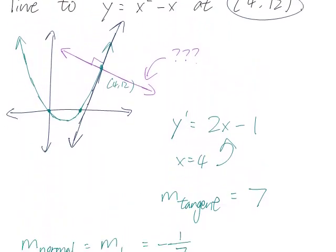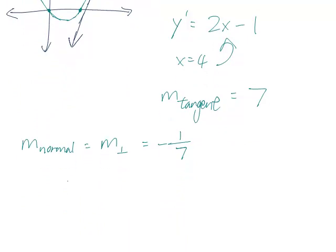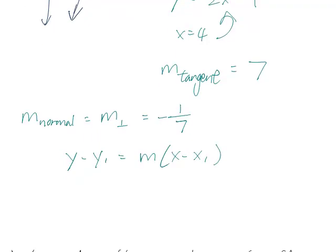And so I can use the point-slope form, y minus y1 equals m times x minus x1. The point was (4, 12), so this is y minus 12 equals m times x minus 4. And the slope is negative 1/7.